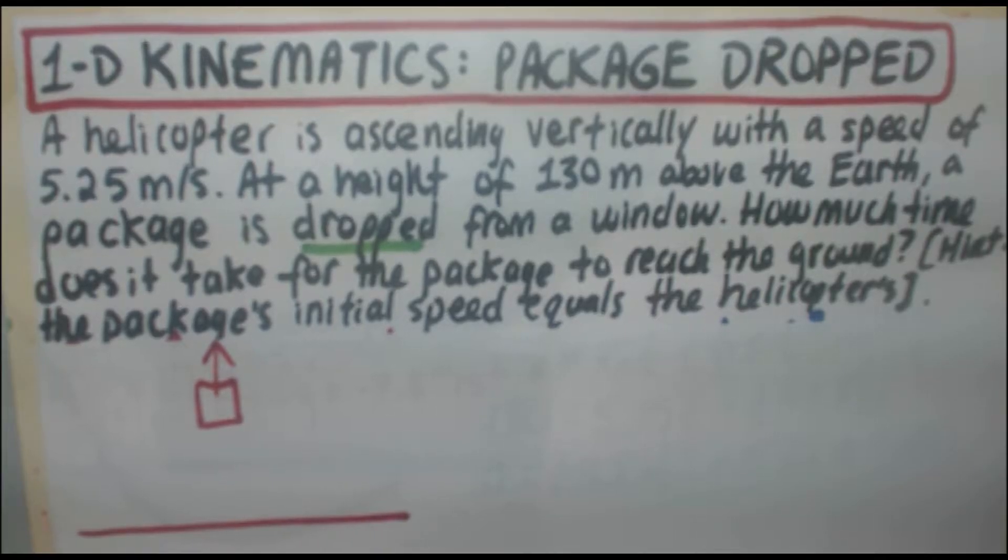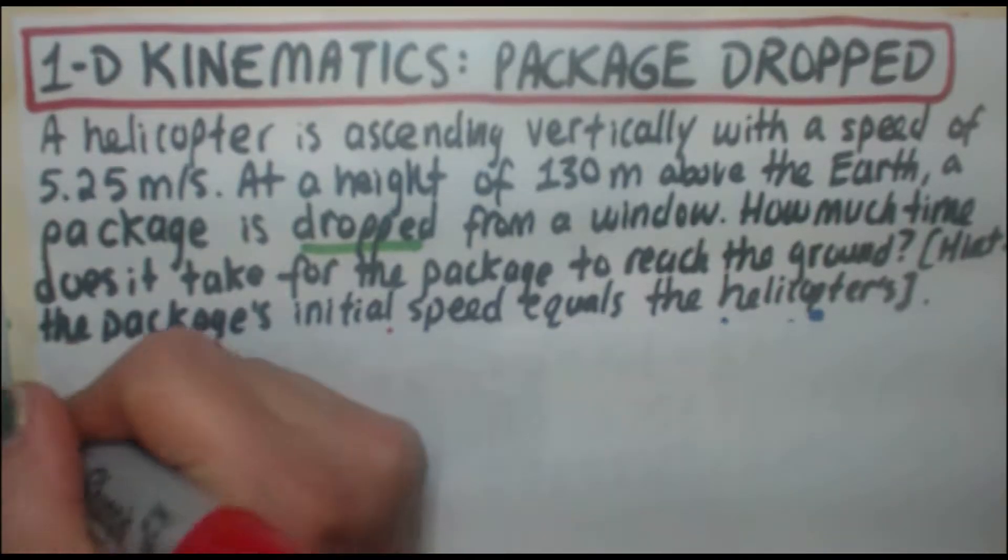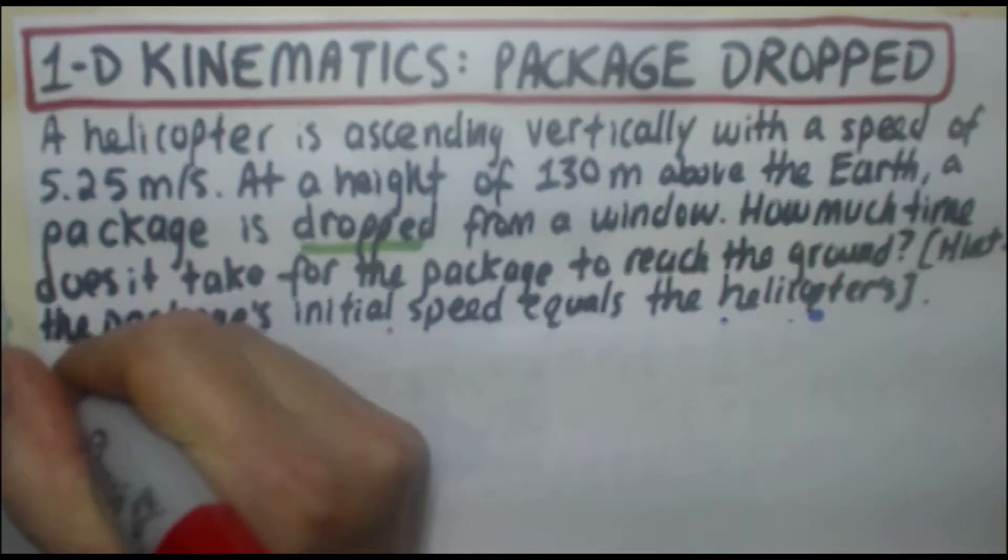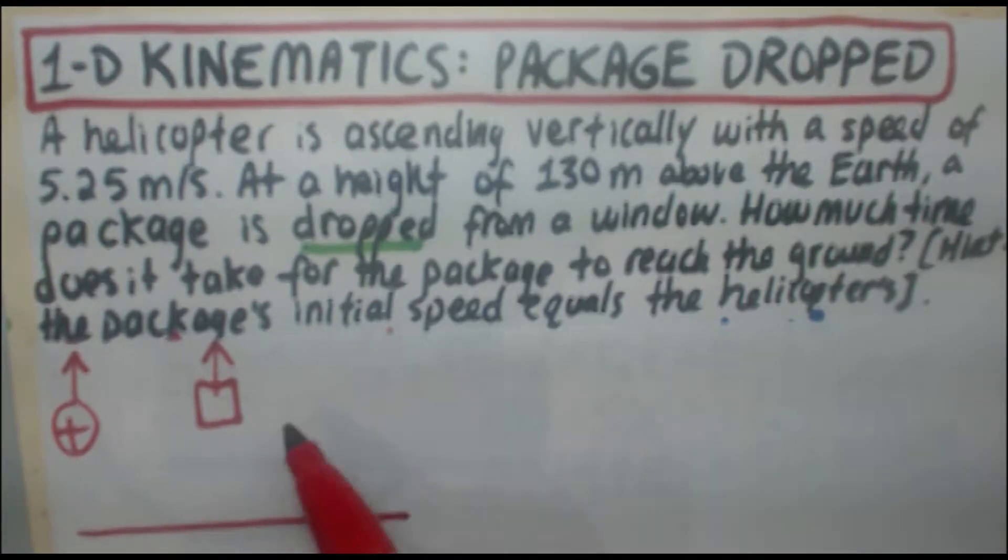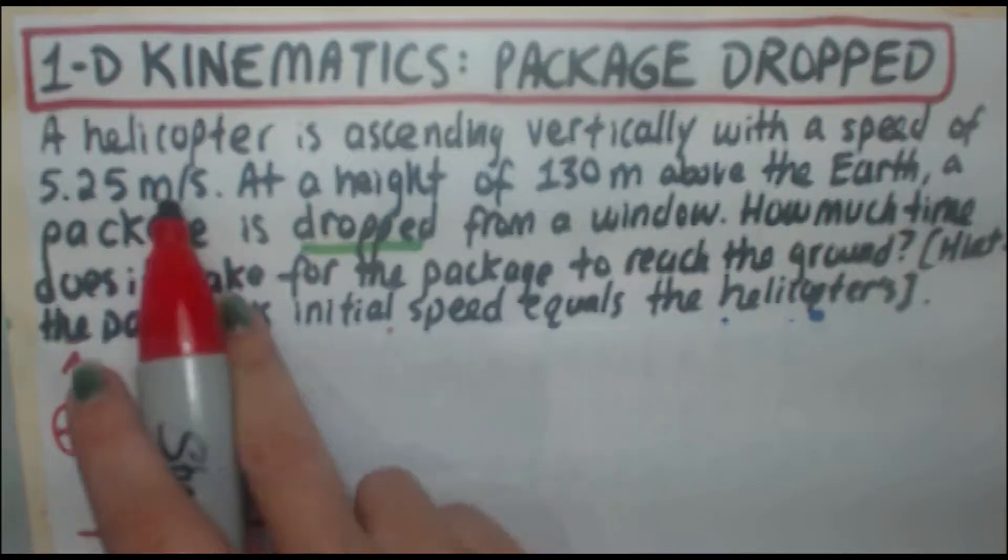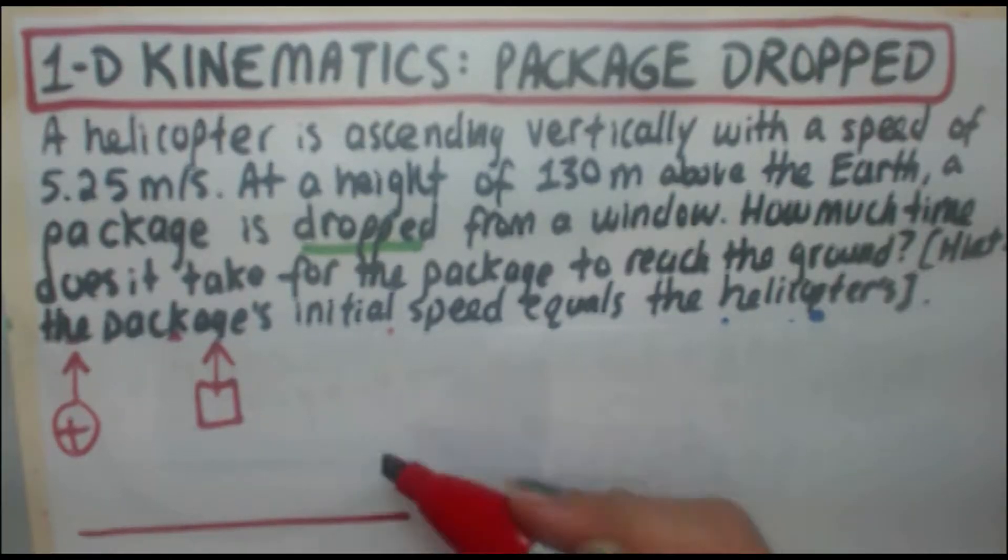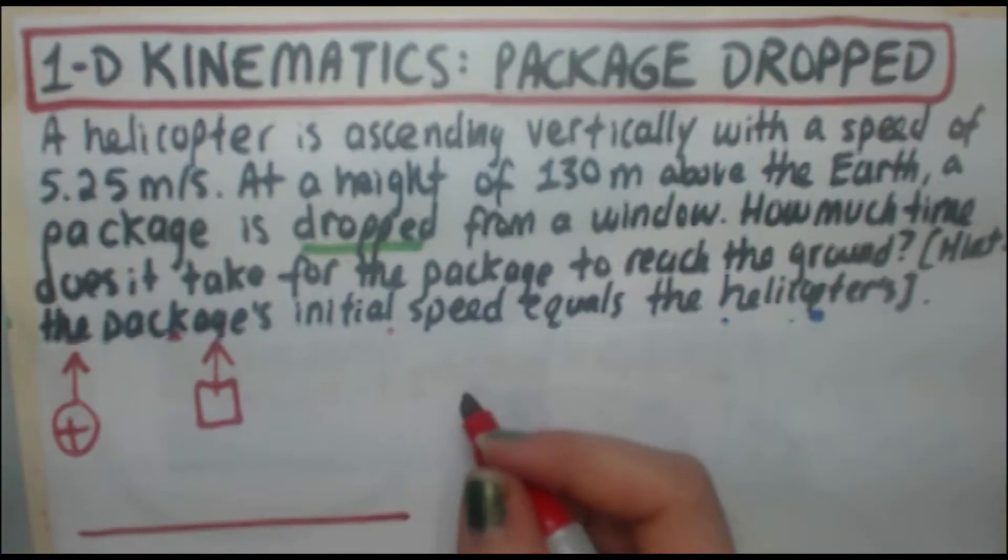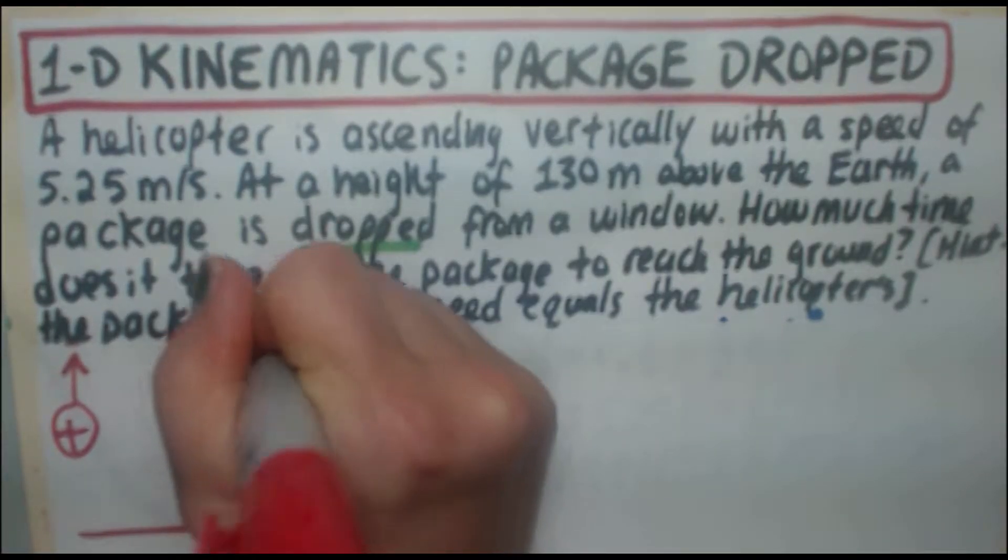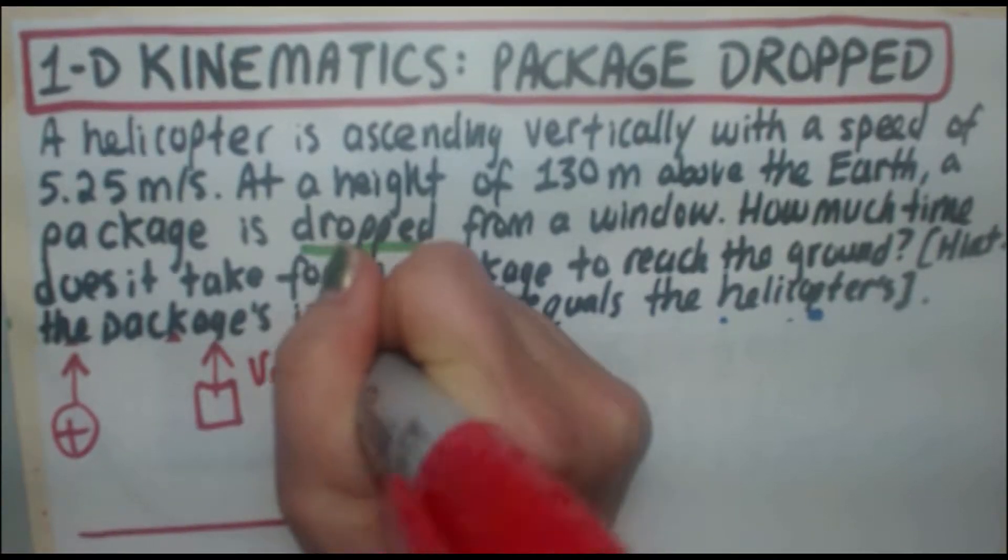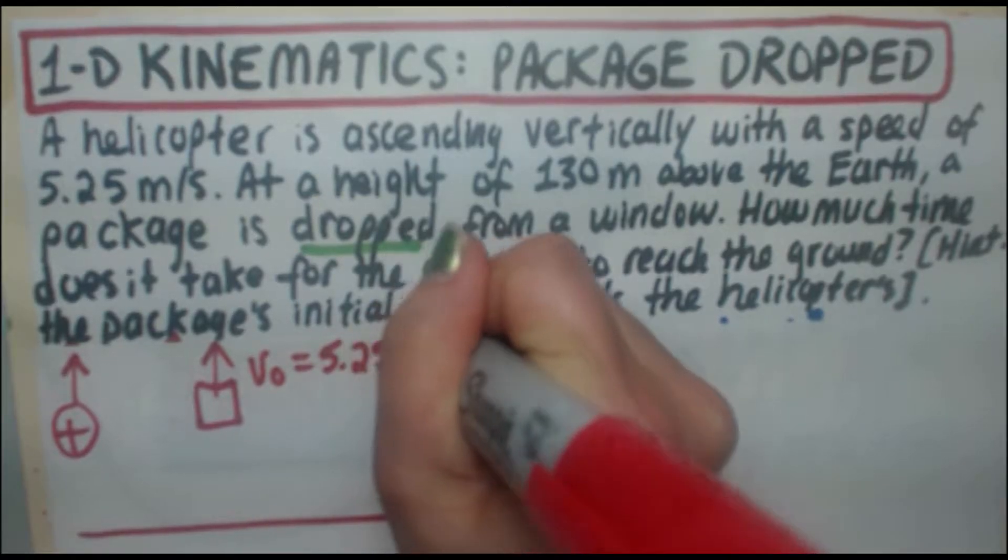Now at this point I want to define my positive direction so I'm going to let that be up. If up is my positive direction, then the package moving up vertically at 5.25 meters per second means that's a positive value because it's going in my positively defined direction. So V0 equals 5.25 meters per second.